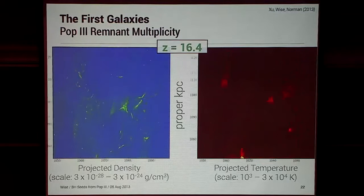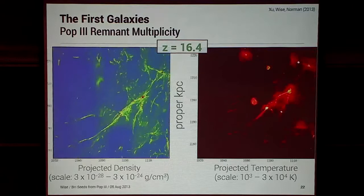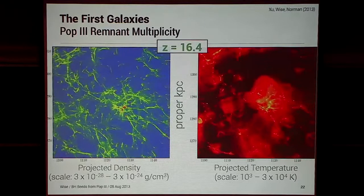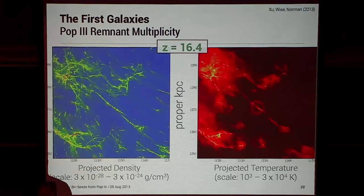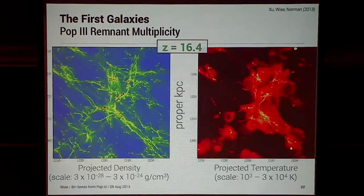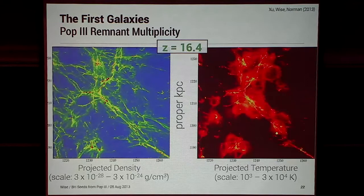Zooming into the high-resolution region, we go up to a more dense region packed with little tiny dwarf galaxies. You can see a biased region that's heated the surrounding IGM. With 13,000 Pop III stars, we have good statistics to look at how many remnants are in each dwarf galaxy. The first paper we put out was on the statistics of how many Pop III remnants are in these dwarf galaxies.